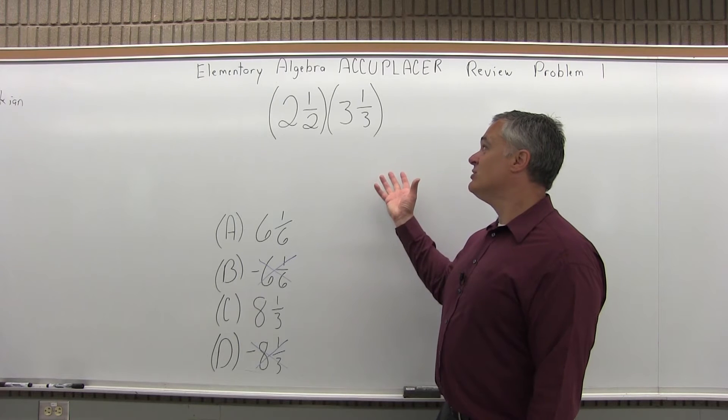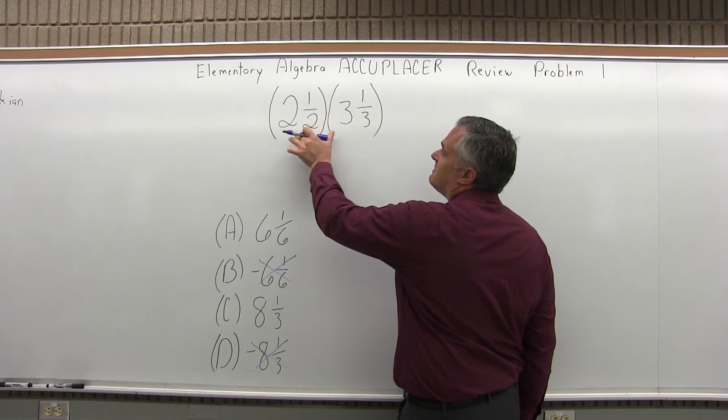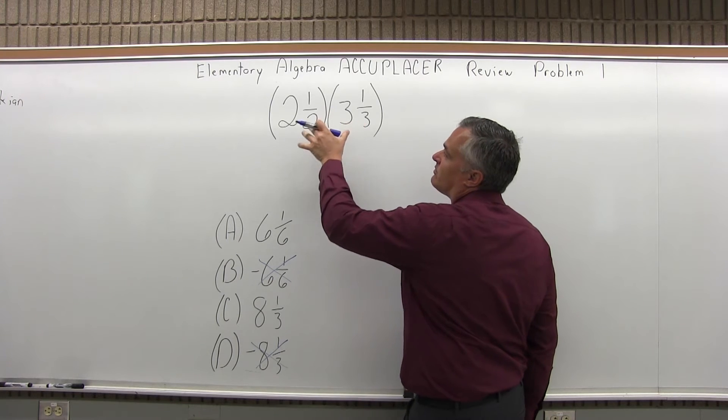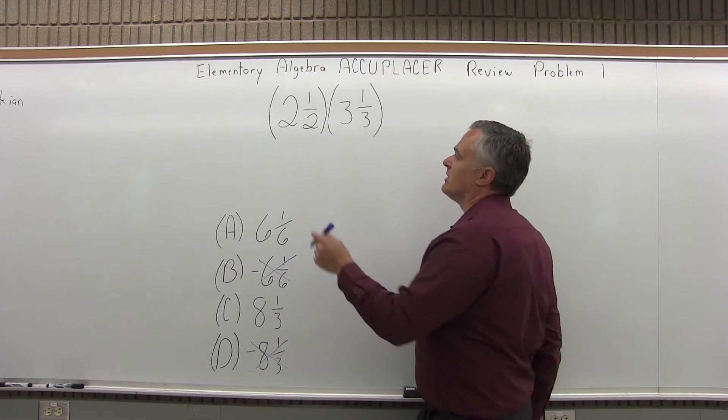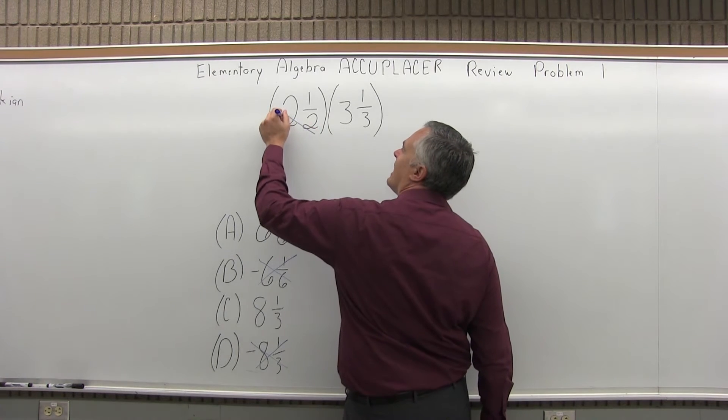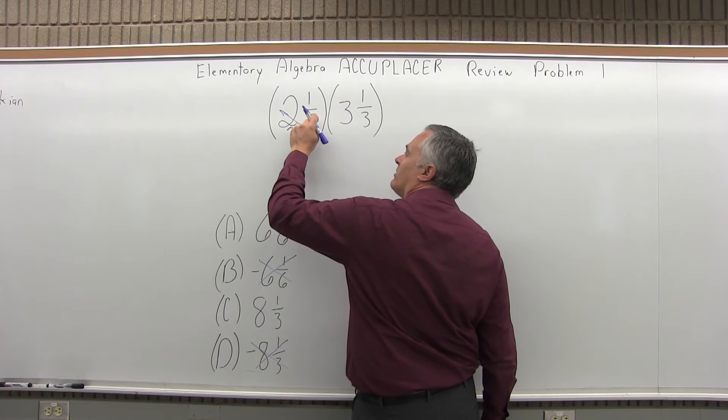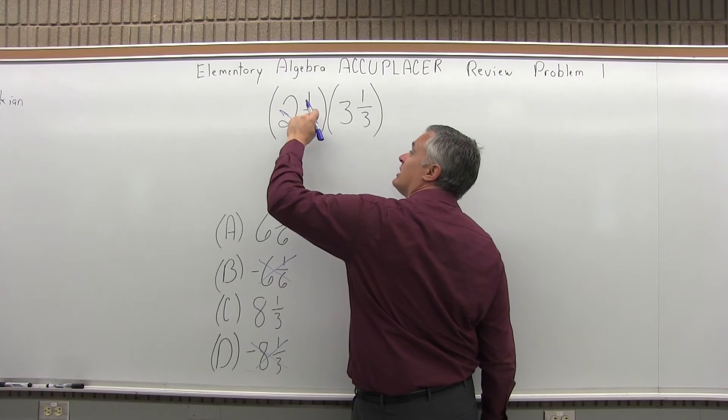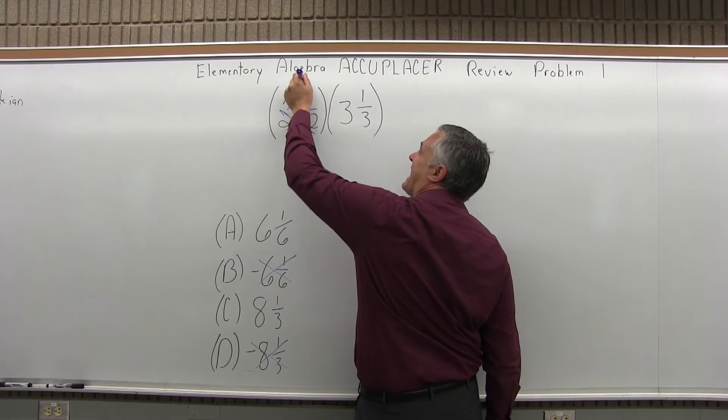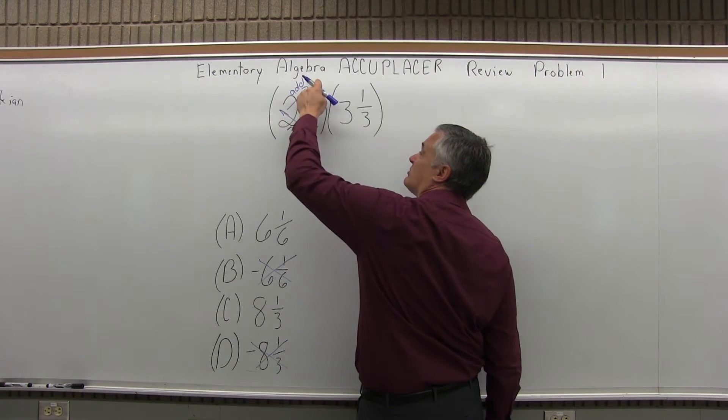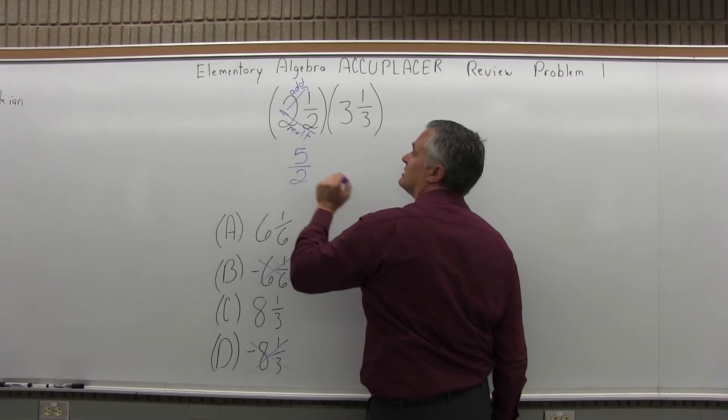Now to actually do the multiplication, we can't multiply it when it's in this mixed number form. We have to convert them both to an improper fraction, which means just a numerator and a denominator, and the numerator is going to be bigger. So this 2½, I'm going to come up this way and multiply the bottom 2 times the front 2. 2 times 2 is 4. Then I'm going to take that result of 4 and add coming up the 1 more that was the numerator. 4 and 1 more is 5, the denominator stays 2.